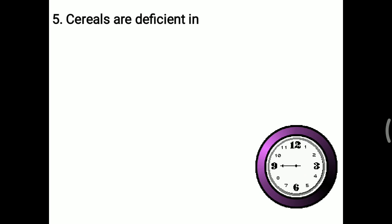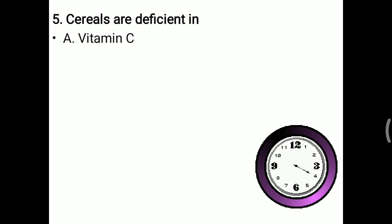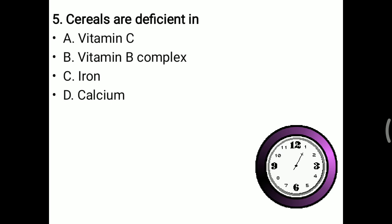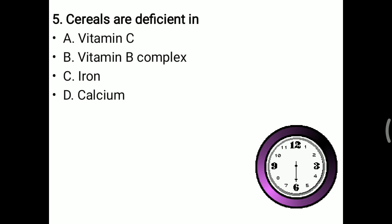Next question: cereals are deficient in. Cereals are a staple diet — wheat, rice, bajra — containing vitamin B complex, iron, and calcium. But vitamin C is mostly present in citrus fruits and is not generally present in cereals. So cereals are deficient in vitamin C. The right answer is vitamin C.